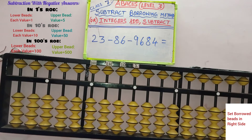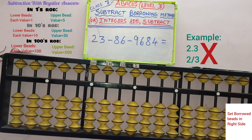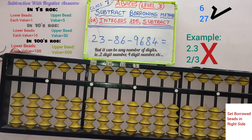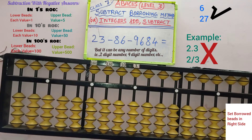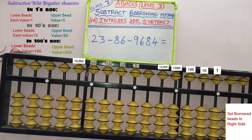Integers means whole numbers. A number should not be in decimal point or a fraction — it must be a whole number. For example, 2.3 or 2/3 are not integers. Hence we are going to see that kind of problem using the borrowing method. The question is 23 minus 86 minus 9684.